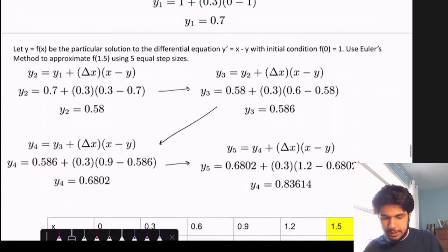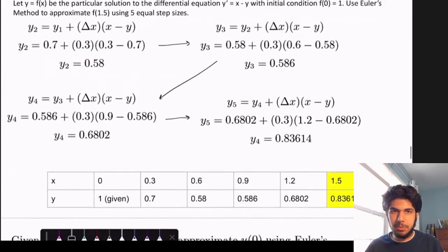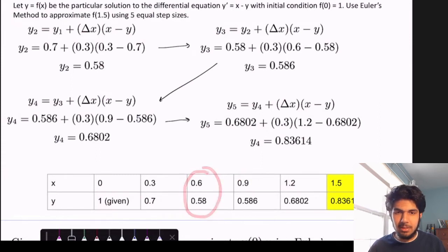And sure enough, that's exactly what we do for y sub 2. We get 0.58. So we fill in 0.58 in the table. Then we have to move to 0.9, and we do the same formula, except this value relies on the previous step.